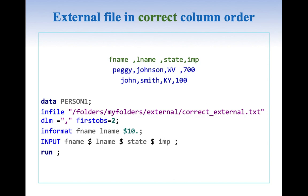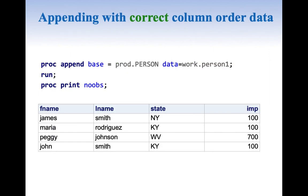Now let us read an external file which has the correct column order. The column order here is FNAME, LNAME, STATE, and IMP. The data in the external file is in this format and we are reading it from the second row and doing an input statement. Once we have read the data when the column order was correct, we are appending two new rows in a very good fashion and everything looks perfect and clean.